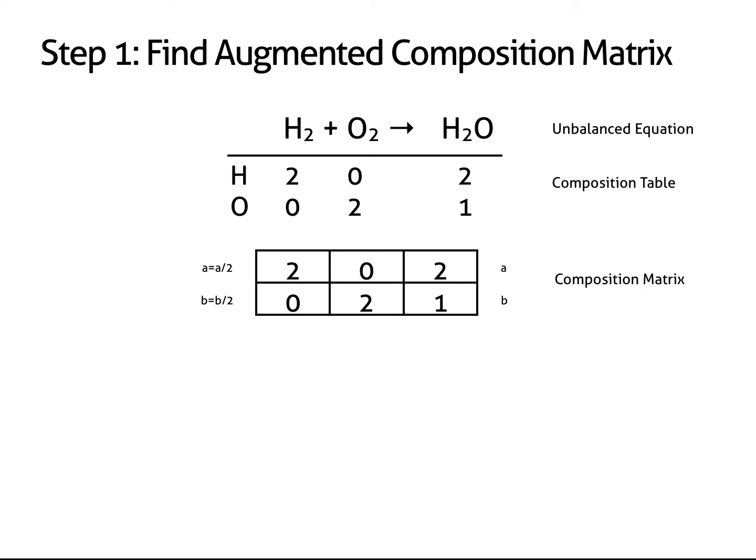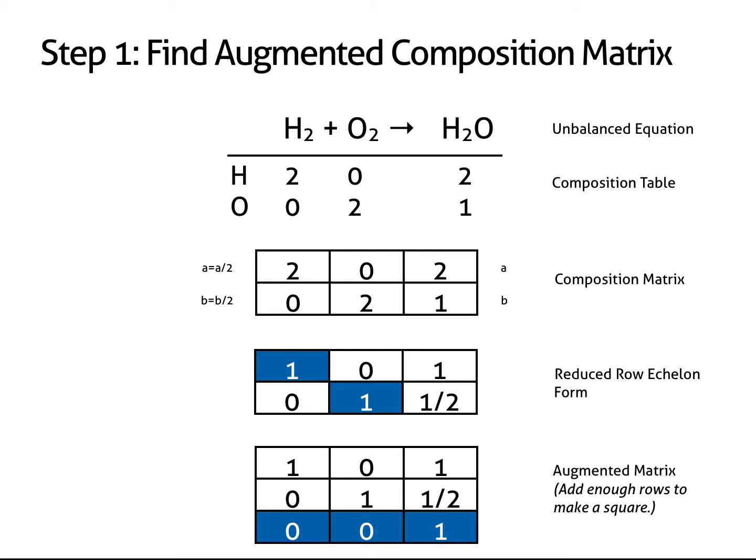Our goal is to convert the composition matrix into an equivalent matrix having ones along the diagonal and zeros above and below the diagonal. We can do this with two operations. First, dividing all the numbers in row A by 2. Next, dividing all the numbers in row B by 2. Doing so gives this matrix, which is said to now be in reduced row echelon form. In other words, we have ones along the diagonal and zeros above and below. The next step is to augment this matrix by adding enough rows to make a square. Because I have three columns and only two rows, I need to add one row like this.